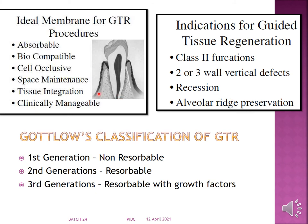Based on ideal features, Gottlo provided a classification for GTR membranes. First generation: non-resorbable membranes requiring removal after approximately 5 weeks. Second generation: resorbable membranes that resorb by themselves. Third generation: resorbable membranes incorporating growth factors, which will be discussed under biologic mediators.